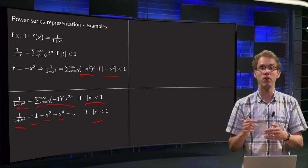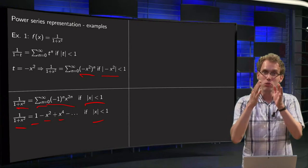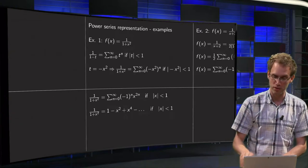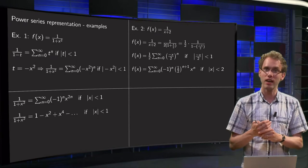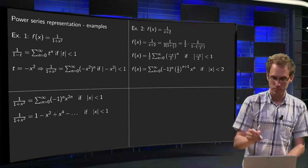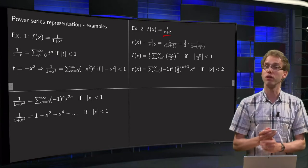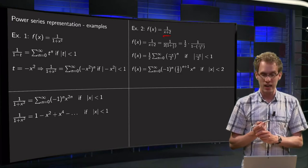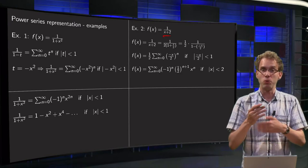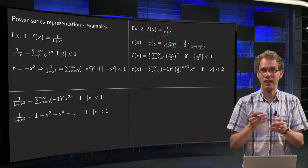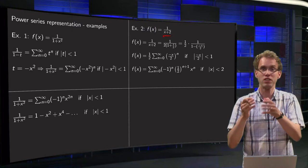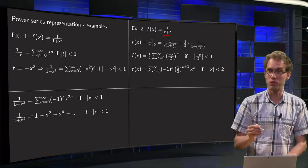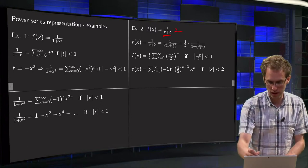So now we have seen a first example of how you can use a known power series to find a power series representation for another function. Let's try the next one: f of x equals 1 over x plus 2.